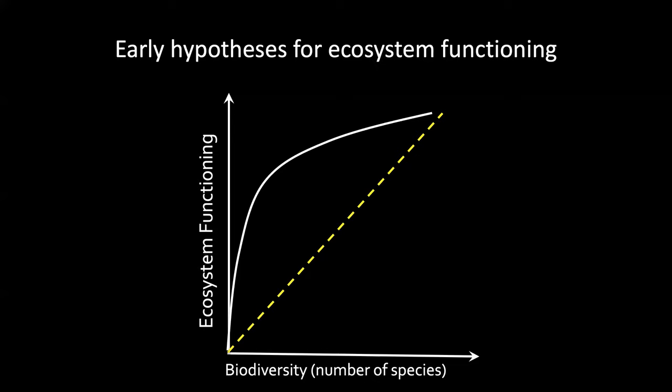In particular, if there are many functionally similar species, then perhaps ecosystem functioning would only decrease when the last species of a functional group or type goes extinct. Other ecologists hypothesized the opposite — that the first few species extinctions might have the biggest impact on ecosystem functioning, because some of the species going extinct first were top predators and other species known to strongly regulate ecosystem processes. These lines on a chalkboard were a decent starting point, but more rigorous empirical and theoretical studies were needed to test these ideas.